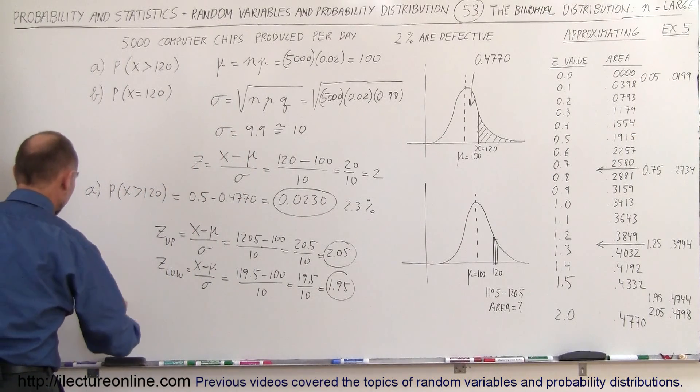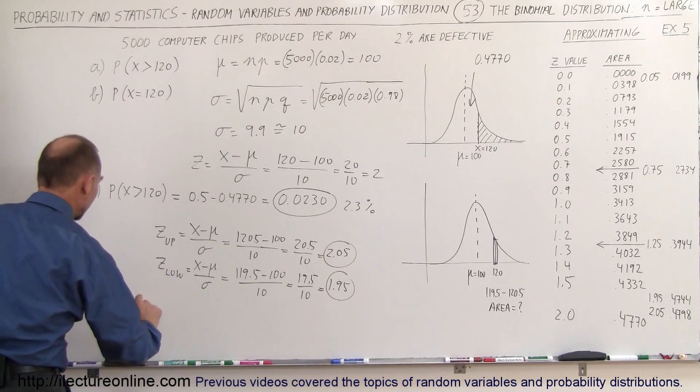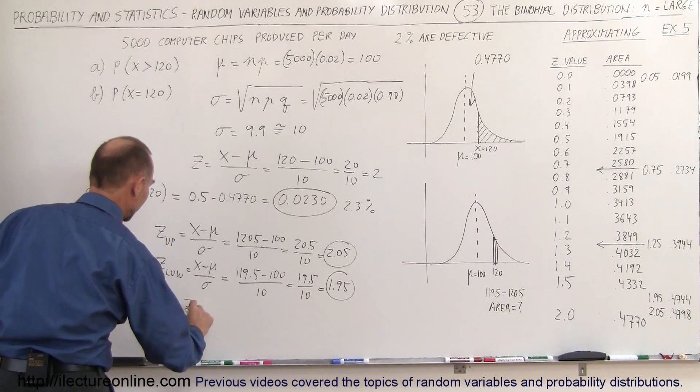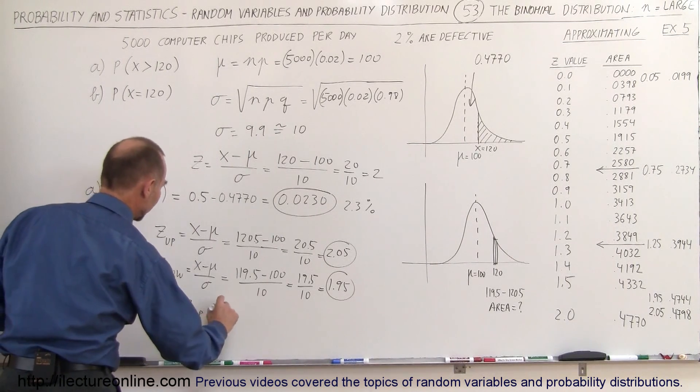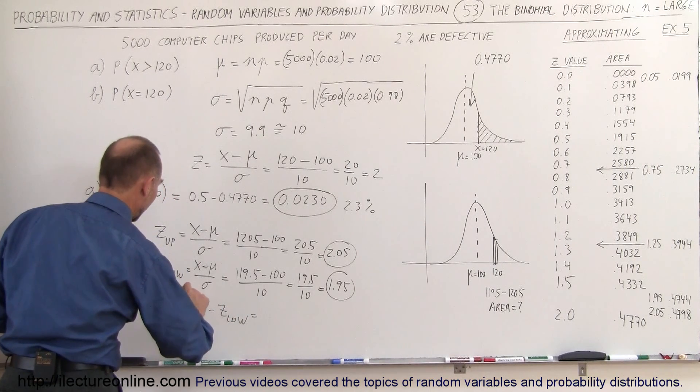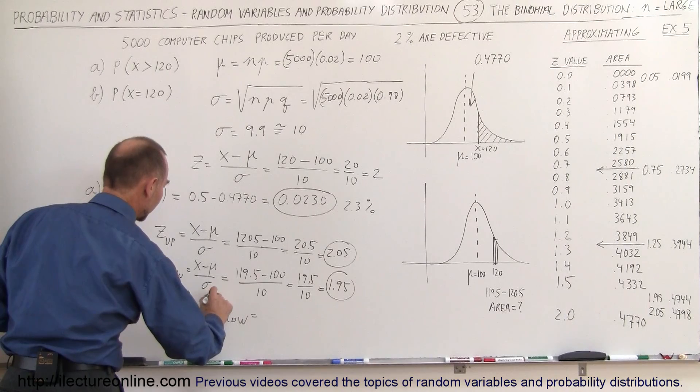Therefore, for part B, the probability that X will be equal to 120 exactly is equal to the Z of the upper limit, the area of the Z, minus Z of the lower limit. So looking for the upper limit,